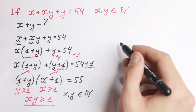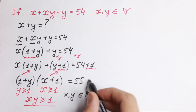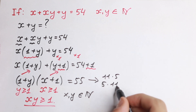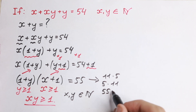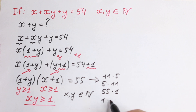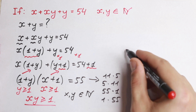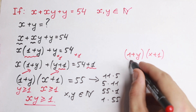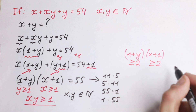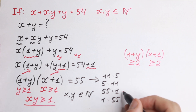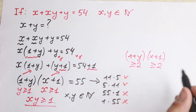We have a product of two parentheses equal to 55. How can we express 55? We have 11 times 5, 5 times 11, 55 times 1, and 1 times 55 — so four cases. But since (1 plus y) and (x plus 1) are both greater than 2, we reject the cases 55 times 1 and 1 times 55. So only 11 times 5 and 5 times 11 are valid.